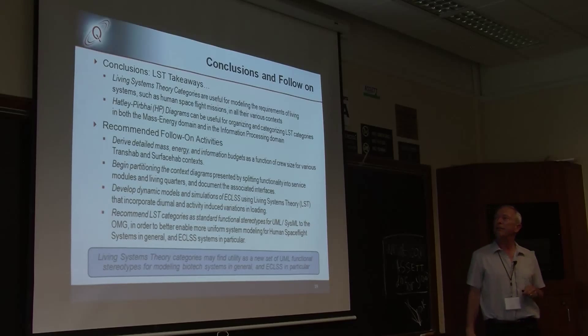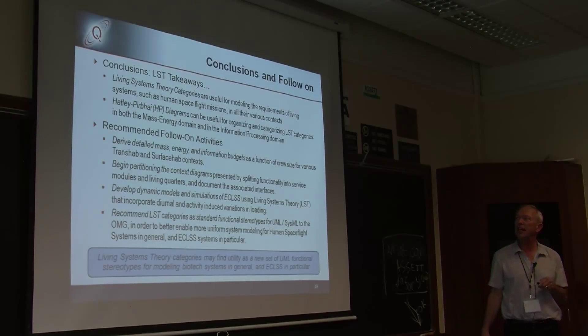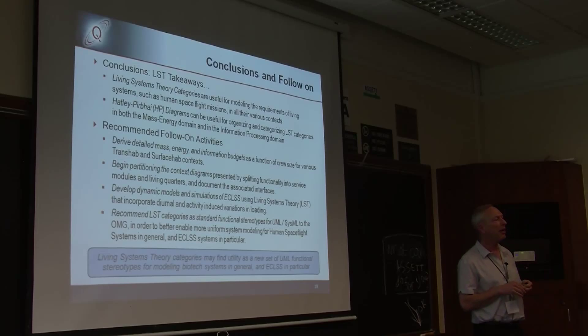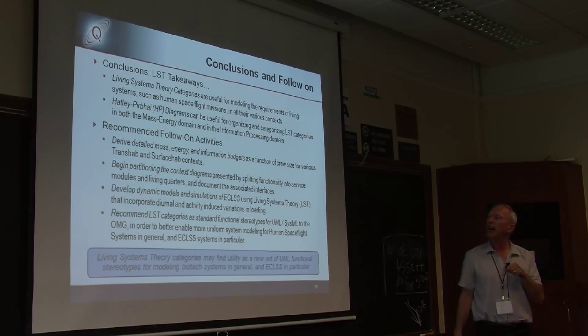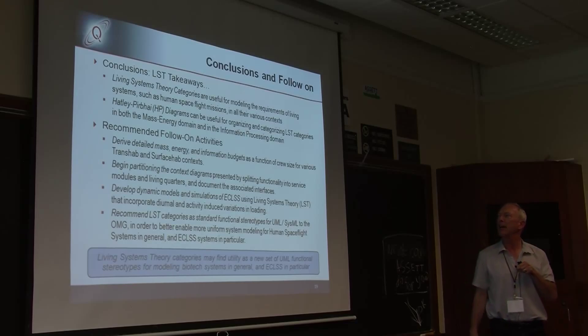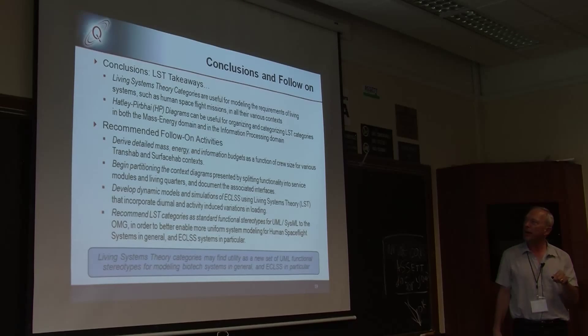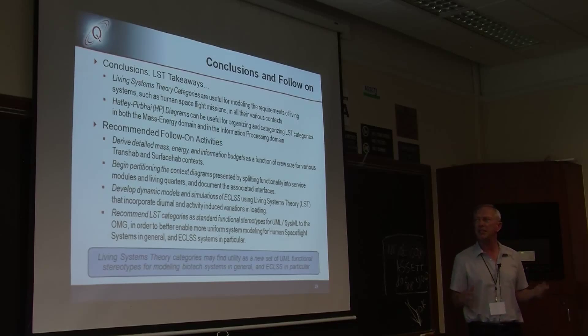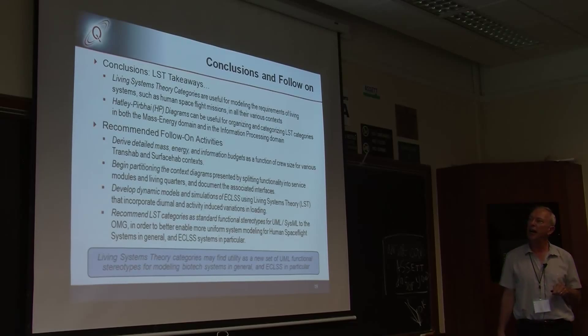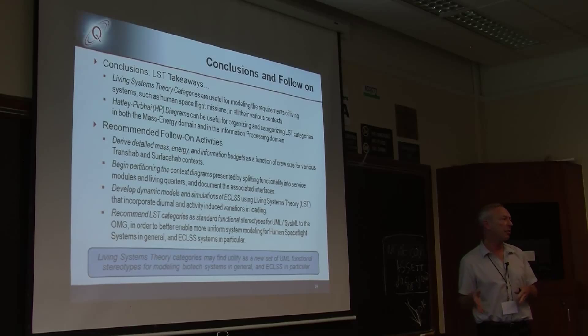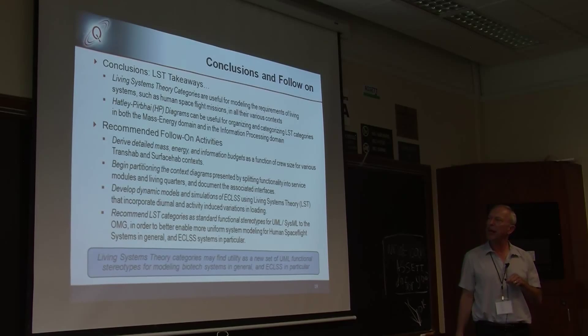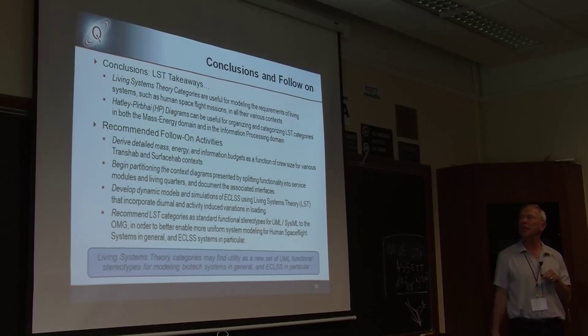Okay, so conclusions on this. It's my opinion and I hope I made a good case that living systems theory categories are a useful way to help model. And they're also an orthogonal way to model life support systems and crew functions so that you can check to make sure you've got everything. And then these Hatley Purvi, I just call them HP diagrams because it's just easier to pronounce. These are a way to categorize your living systems theory categories because otherwise it gets to be too much of a tangle when you're looking at those categories. It helps organize the categories for follow on. I really think we need to define and it really has to come from NASA or whoever is providing the requirements for the mission. Some critical mission threads that will help us derive what are the real mass energy and information budgets that we need to support the crew. How big does the crew have to be for a given mission?